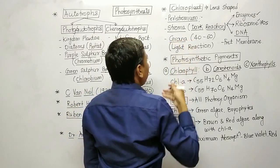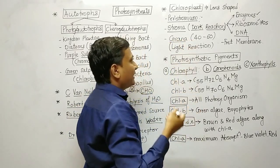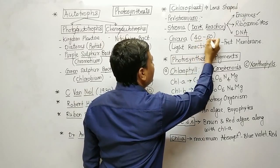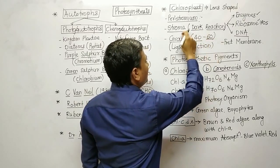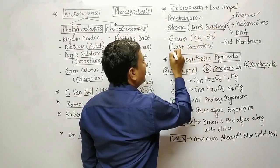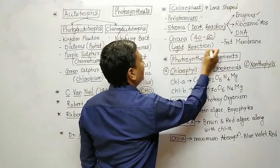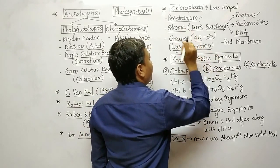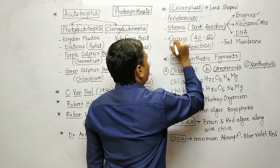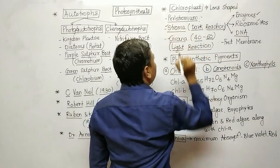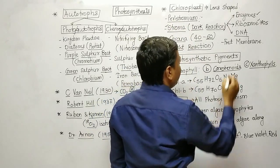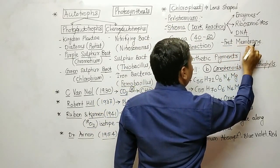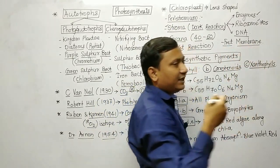In stroma, disc-shaped structures called grana are present, numbering around 40 to 60. Stroma is where dark reactions occur, and grana is where light reactions occur. Light reactions occur at the grana (thylakoid location) and dark reactions at the stroma. Adjacent grana connect through a fret membrane called the interlamellae.